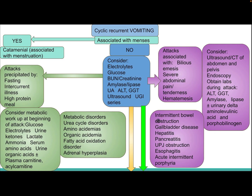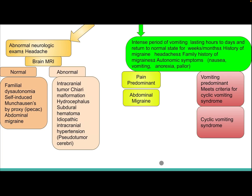Differential diagnosis in this scenario includes intermittent bowel obstruction, gallbladder disease, hepatitis, pancreatitis, ureteropelvic junction obstruction, esophagitis, and acute intermittent porphyria.